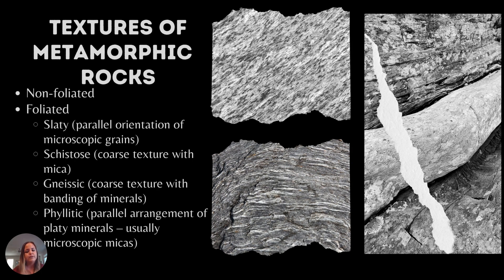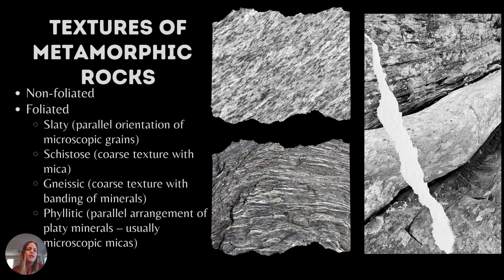We've talked about foliated versus non-foliated — now we're going to actually start looking at it in the rocks. The first thing you want to do is decide if it's foliated or not foliated. If it's not foliated, there's no arrangement of the grains. If it is foliated, it might have one of these particular fabrics: slaty, schistose, gneissic, or phyllitic. All of those just describe the way the minerals are arranged in the rock, and they point to the particular rock. If it has a slaty texture, it's slate; if it has a schistose texture, it's schist, and so on.